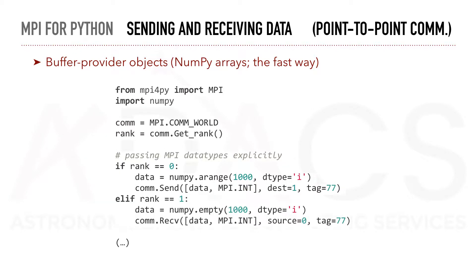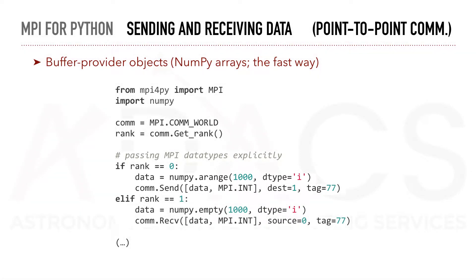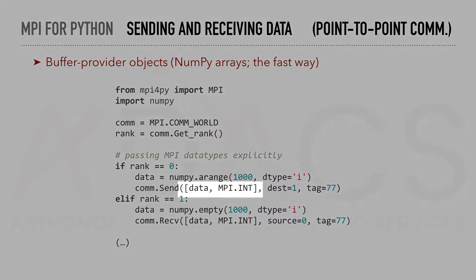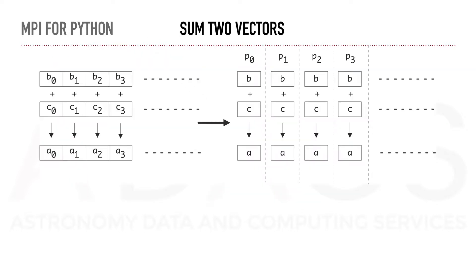In this example, we pass a NumPy array containing a thousand integers. In the first parameter of the send and receive functions, note the capital letter, we specify the list that we just discussed. MPI can also discover the type automatically for NumPy arrays. In this case, we pass an array of floating point data.